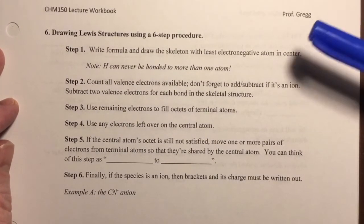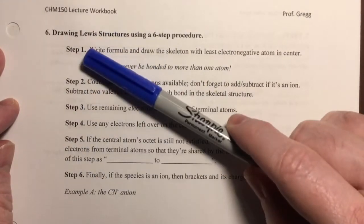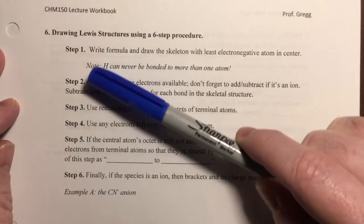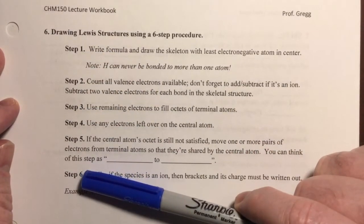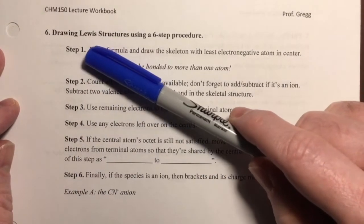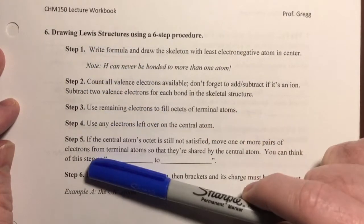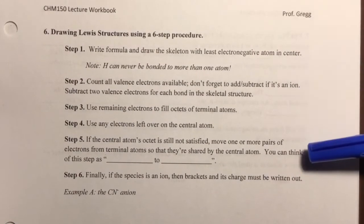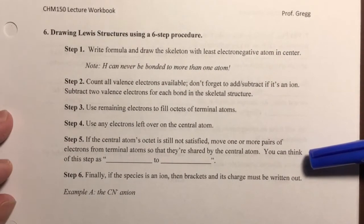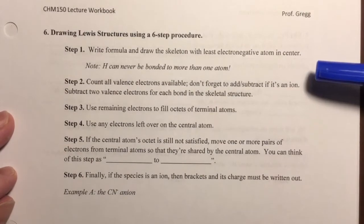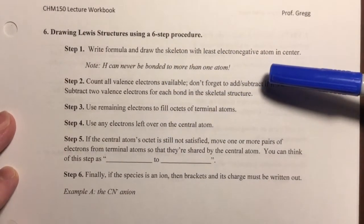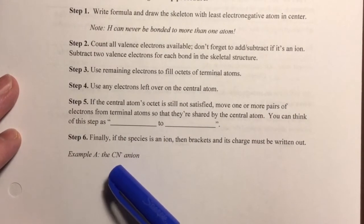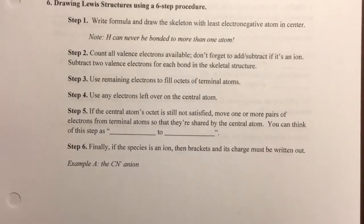Before I start, I want to say there are different ways that different people and different sources break this process apart. I'm using six steps, but you might see it in a textbook as only five steps, or perhaps seven. Six seems to be about right — detailed enough, but not so long that people have difficulty memorizing the steps. As we go through each of these steps, I'm going to put them into practice by working on this anion right here, the cyanide anion, CN with a minus charge. So let's get started.